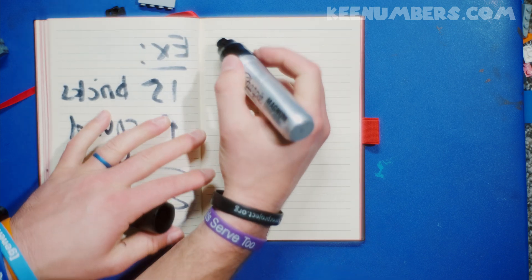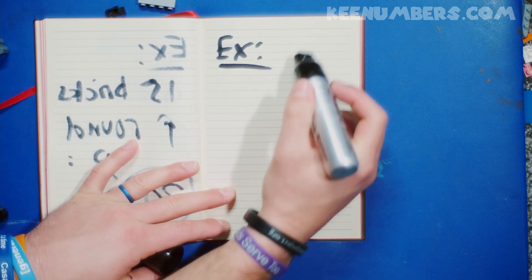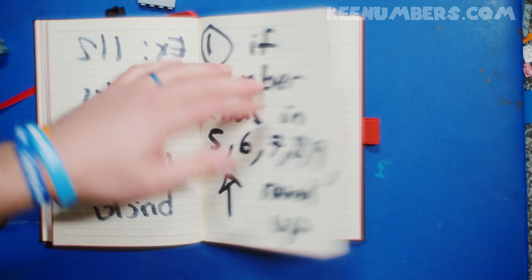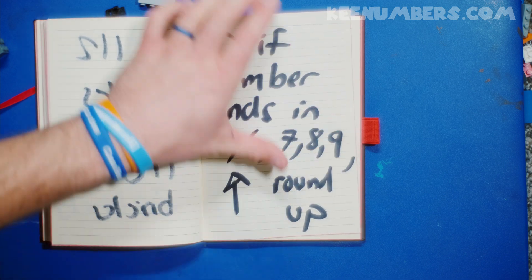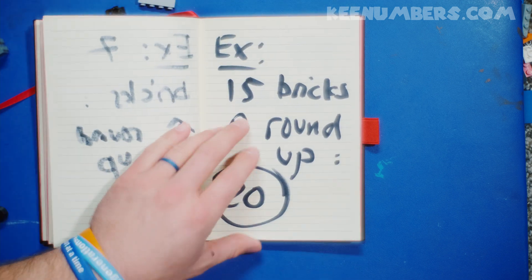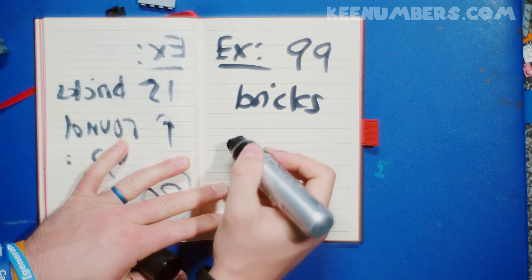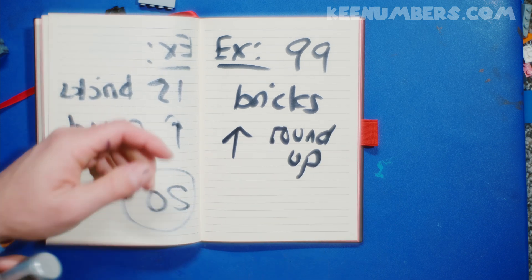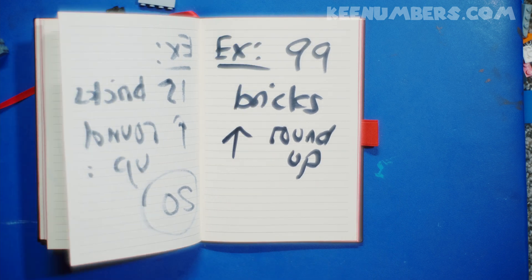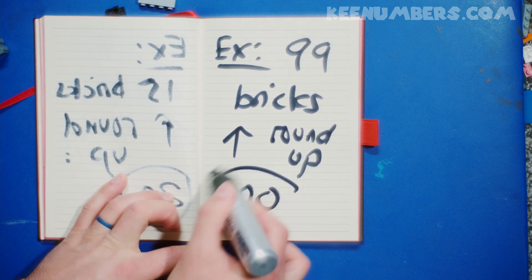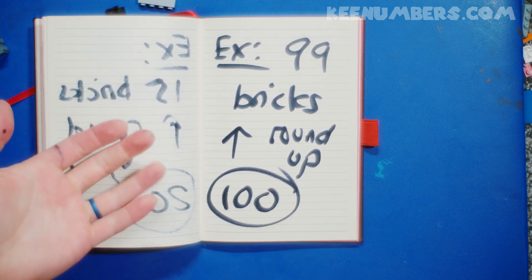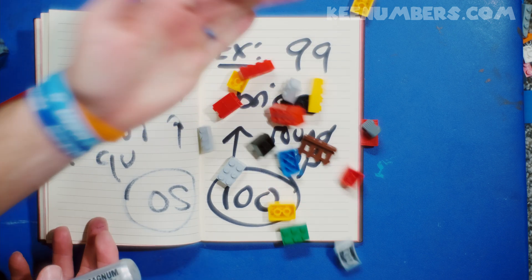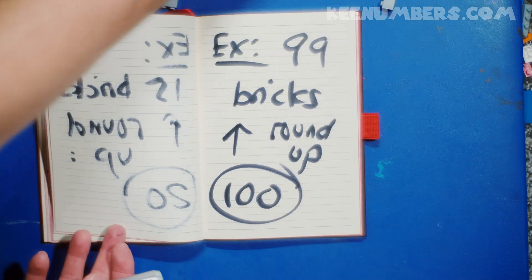Let's do another example. What if it's 99 bricks? The rule says if it ends in nine — five, six, seven, eight, or nine — instead of saying 99 bricks, we'll just round up. What's the nearest ten? Well, nine is pretty close to ten, so this means it's about 100 bricks. It's a way to talk about numbers and make it as easy as possible, especially when you're dealing with a large number.